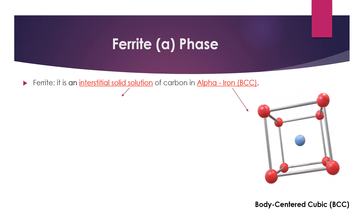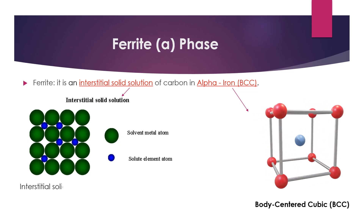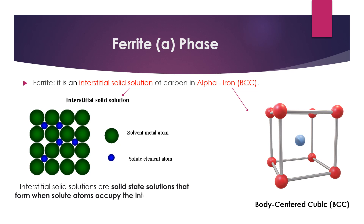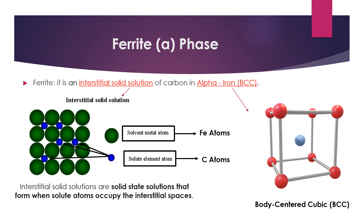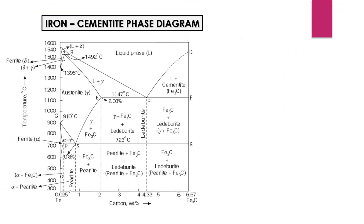Interstitial solid solutions are solid-state solutions that form when solute atoms occupy the interstitial spaces. In this ferrite phase, carbon atoms are the solute atoms and they occupy the interstitial spaces between the iron atoms. In the iron-cementite phase diagram, this region is the region of 100 percent ferrite phase.